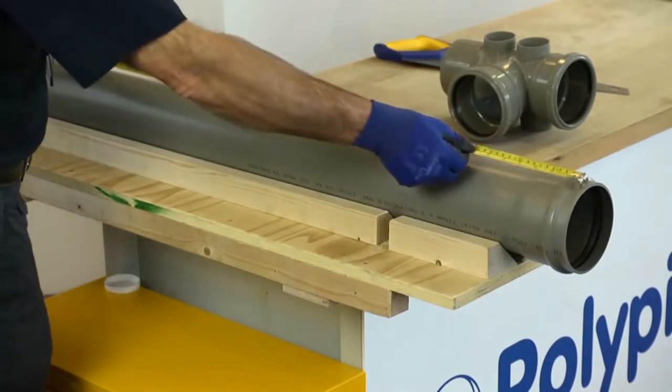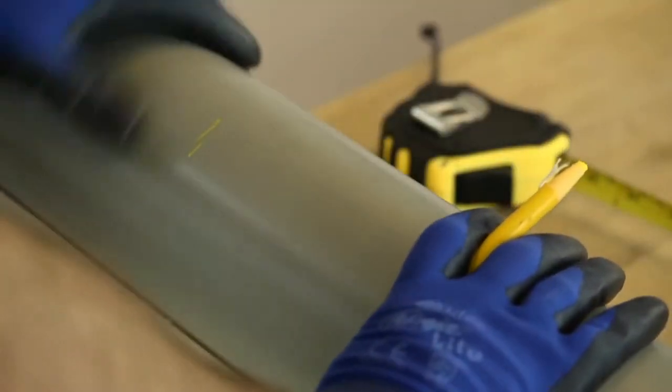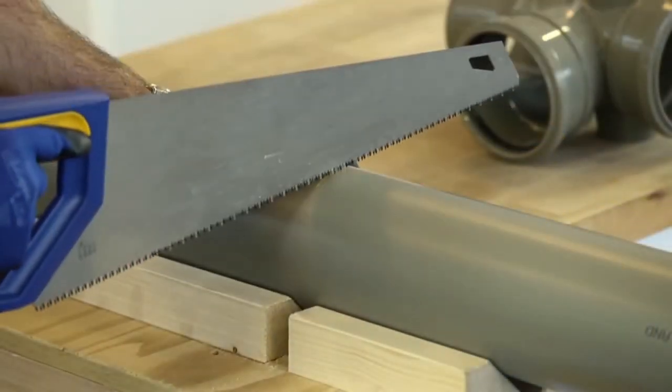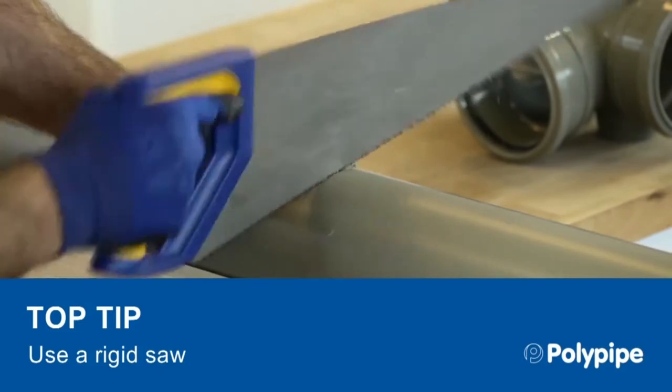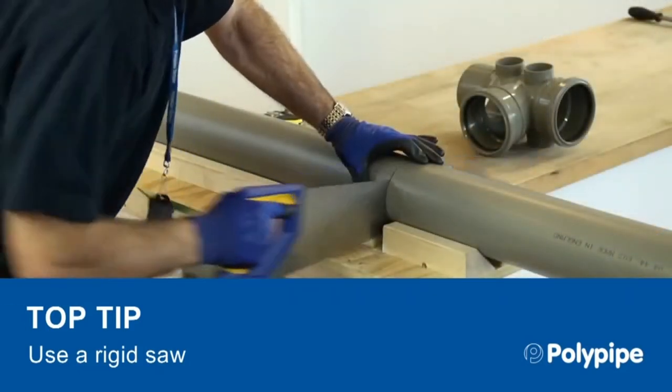First, measure and mark the pipe at the desired length, then cut to length. Make sure you use a rigid saw as a laminate saw could easily wander and the cut won't be square.